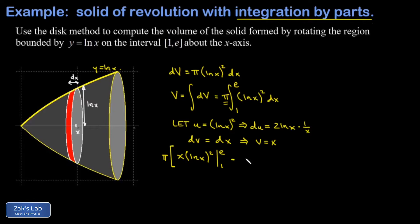Then I have minus the integral of v du. So the integral from 1 to e of x times 2 natural log x times 1 over x dx, and those x's are going to cancel.